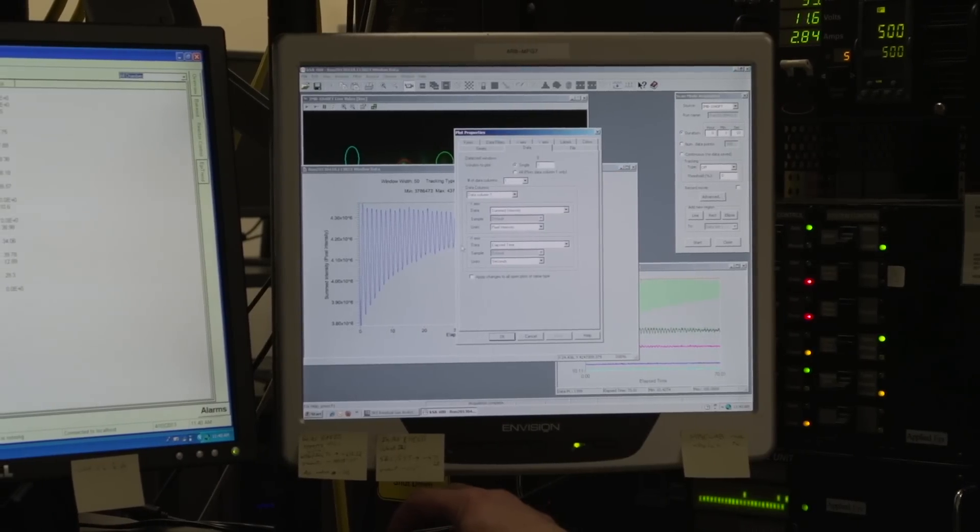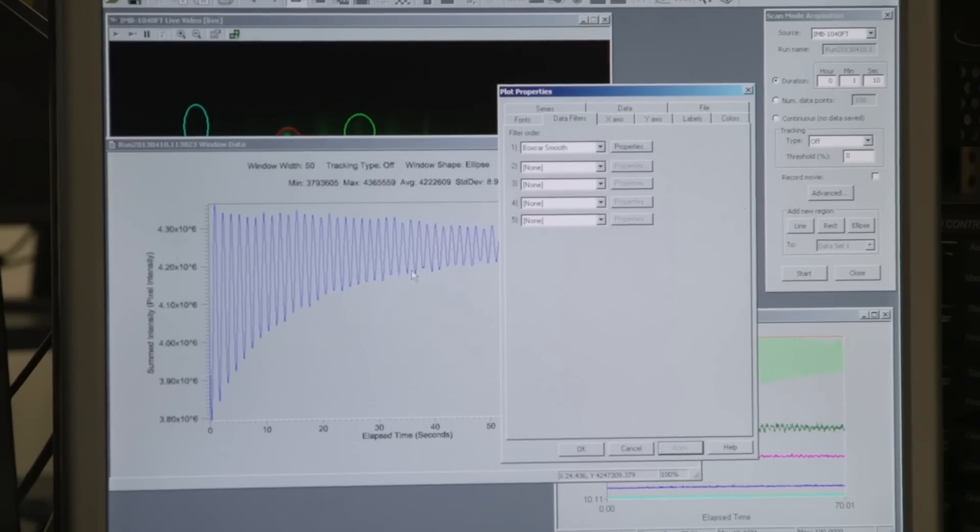And now comes the part that makes my life really easy. I click on a couple of buttons, and it tells me what the frequency of oscillation is. It's a very powerful, real-time tool for monitoring the evolution of the electron diffraction pattern.